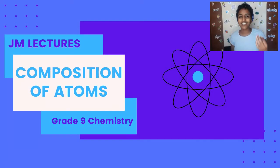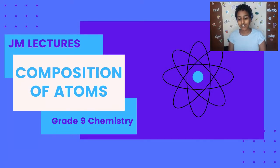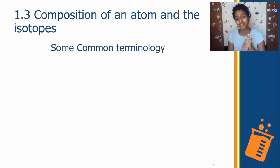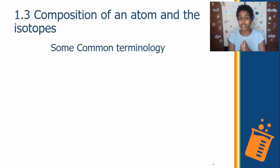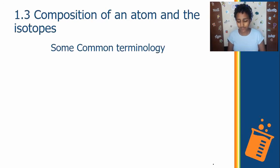Welcome back to JN Lectures. This is the third subunit of the first unit of grade 9 chemistry: composition of an atom and the isotopes. We have to go through some key terms in order to understand much more about an atom.